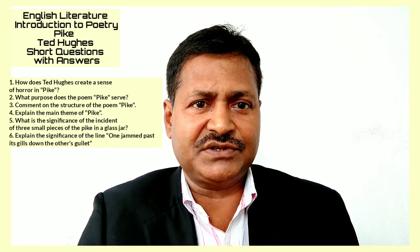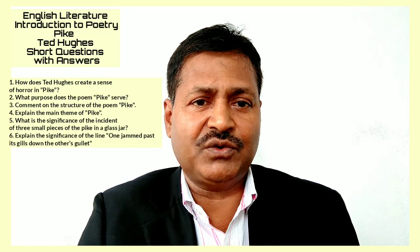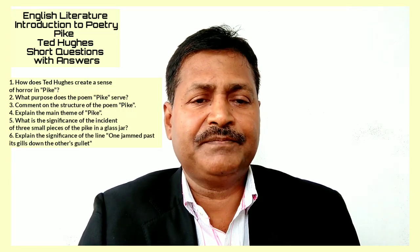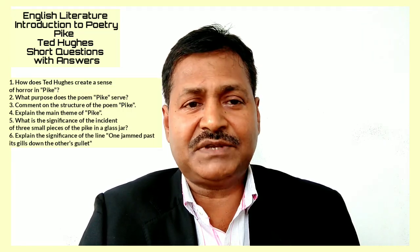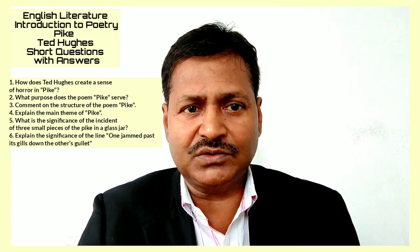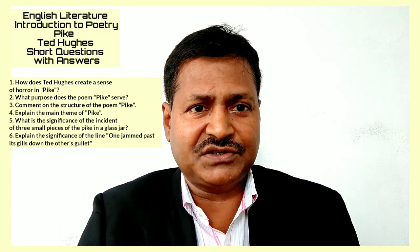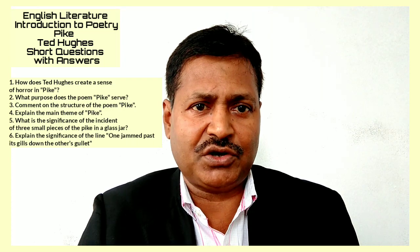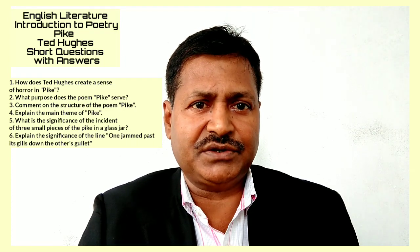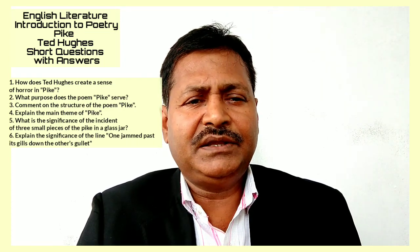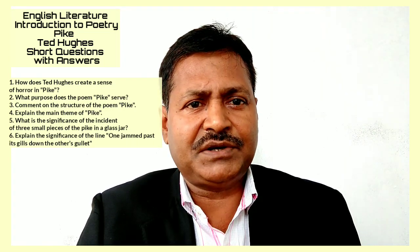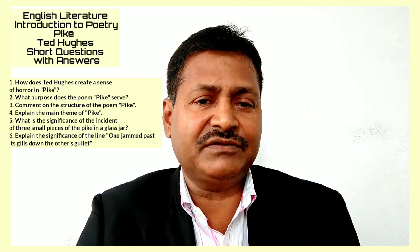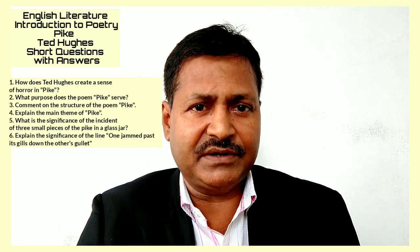Ted Hughes creates a sense of horror in Pike by using words related to terror and fright. He describes the fish as 'green tigering the gold,' suggesting its resemblance to a tiger's color and predatory nature. Then the poet says that pikes are killers from the egg and they have malevolent aged green.